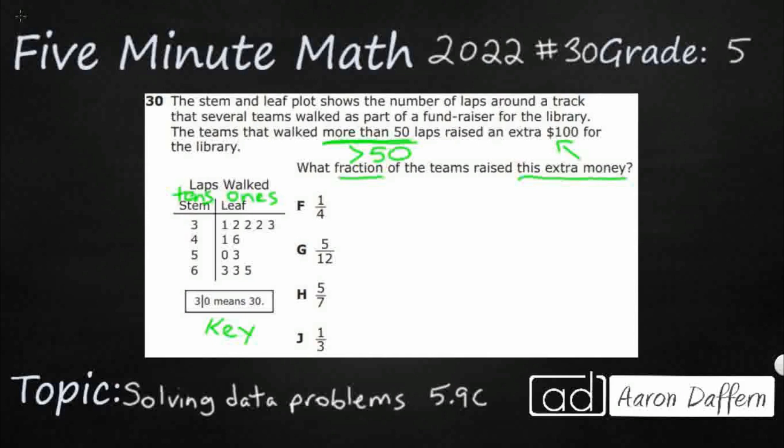It's not always going to be that easy. Sometimes it will be decimals. Sometimes we'll get into even fractions or something like that. But in this case, it's pretty easy. It's going to be tens and ones. So what does this actually mean?